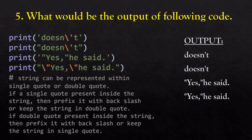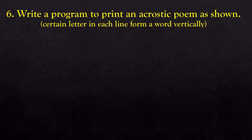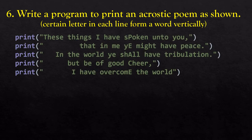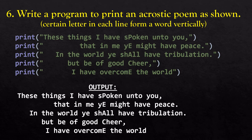Question six: write a program to print an acrostic poem. An acrostic poem has certain letters in each line that form a word when read vertically. In this case, the letters P-E-A-C-E are aligned so they form the word 'PEACE' vertically. You just have to write print statements with appropriate spaces so that the particular letters appear one on top of the other to produce the output.